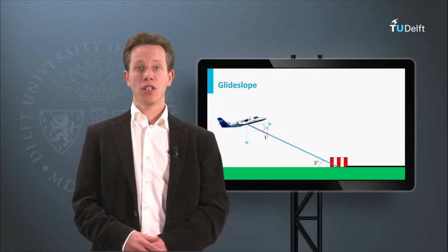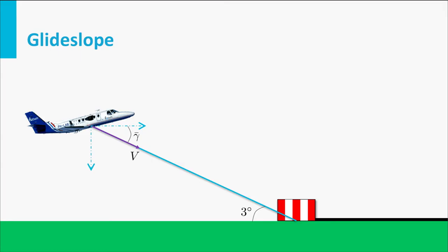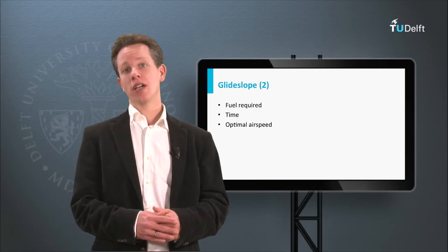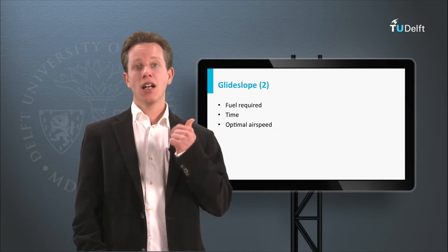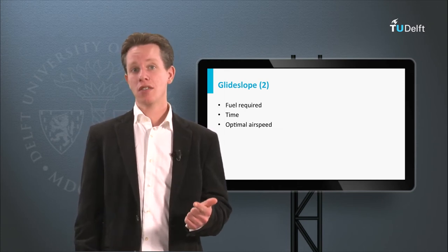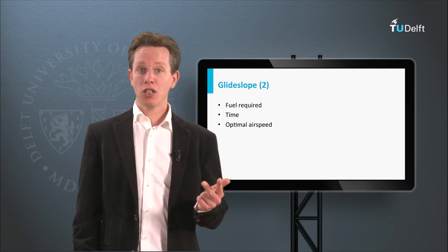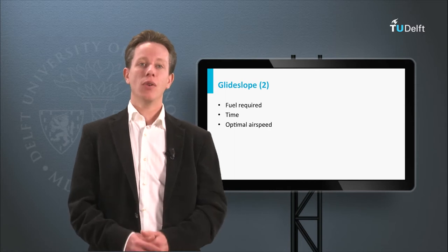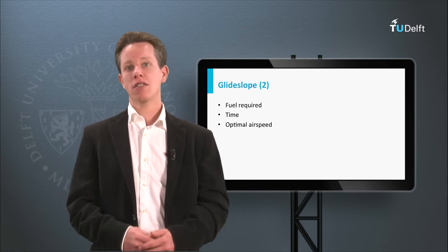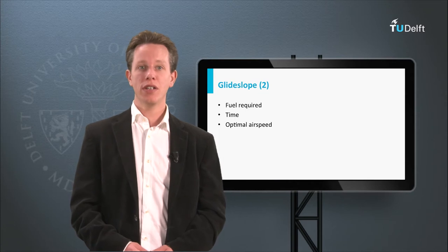When an aircraft approaches an airport for landing, it will typically descend along a 3-degree glide slope with engines fully operational. The airline operating this aircraft must know beforehand how much fuel will be burned during the complete descent, how long it will take time-wise, and at which airspeed the aircraft should fly and with which engine power setting. I hope this summarizes the objectives of this and the coming videos.